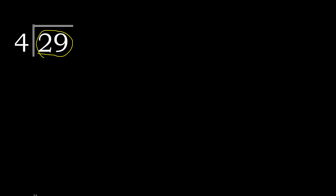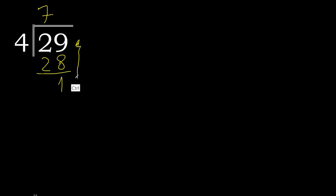But not greater. 4 multiplied by 8 is 32 — it is greater. 4 multiplied by 7 is 28 — it is not greater. 29 minus 28 is 1. Here there is no number.